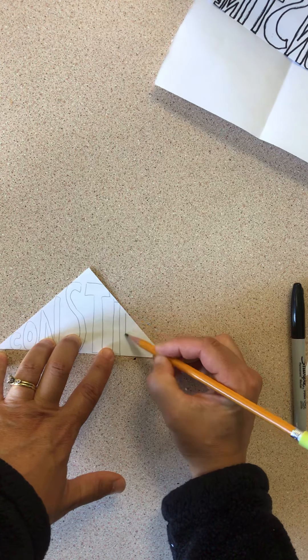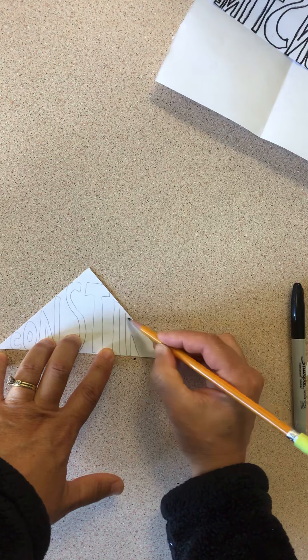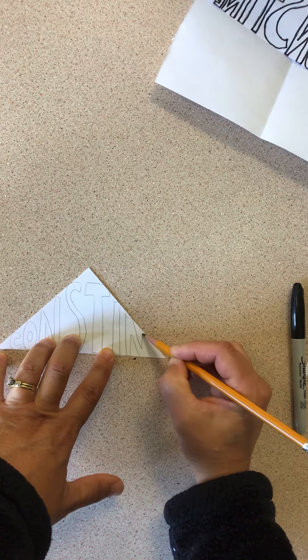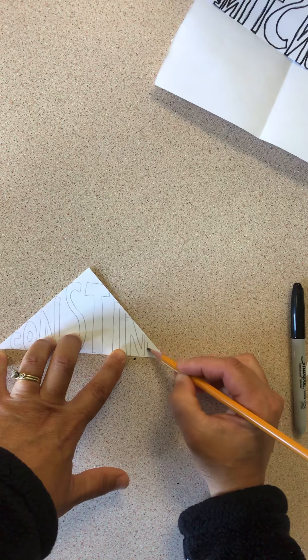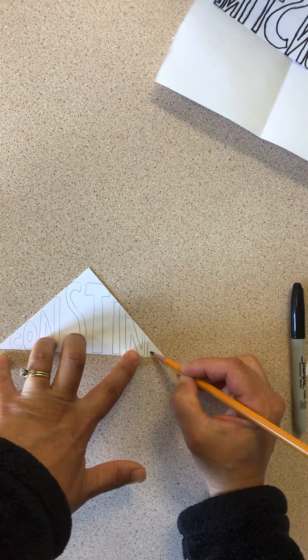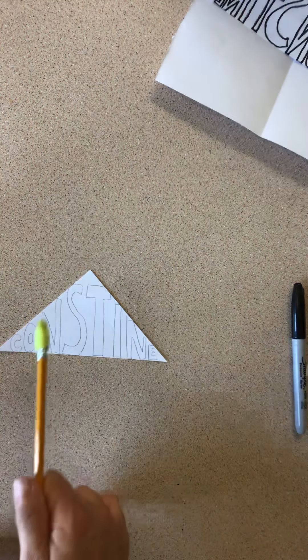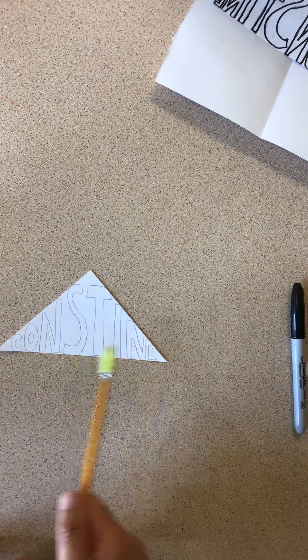And an N, like that. And another E. So they've gotten tiny. Notice all my letters go from the top of the triangle to the bottom.